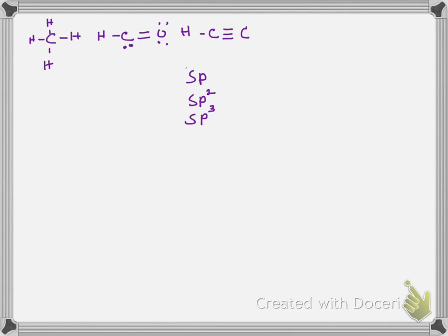When you're asked what the hybridization is, you're always talking about around a specific atom. For instance, if you're asked about this, you're going to be asked about around this carbon or that carbon. They'll always specify around what atom, or they'll say around the central atom. There are three hybridizations you have to know for the new AP curriculum.